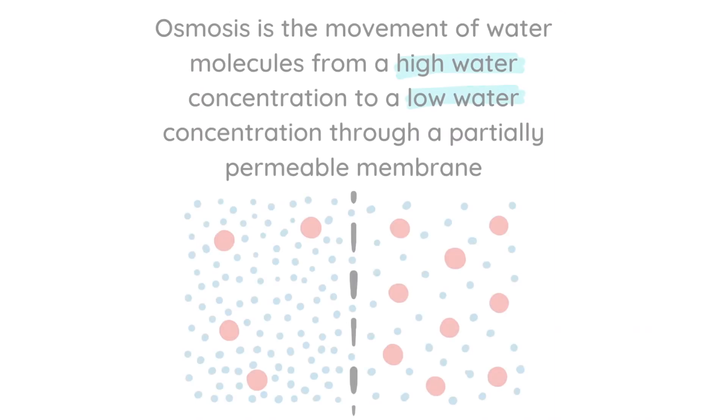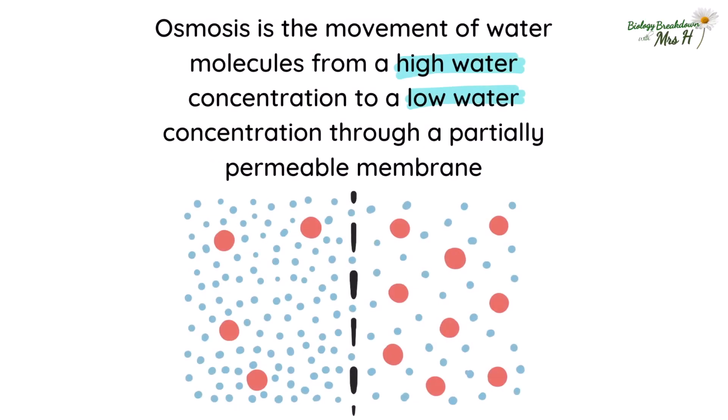Hello, Mrs H here. Osmosis is the movement of water molecules from a higher water concentration to a lower water concentration through a partially permeable membrane.